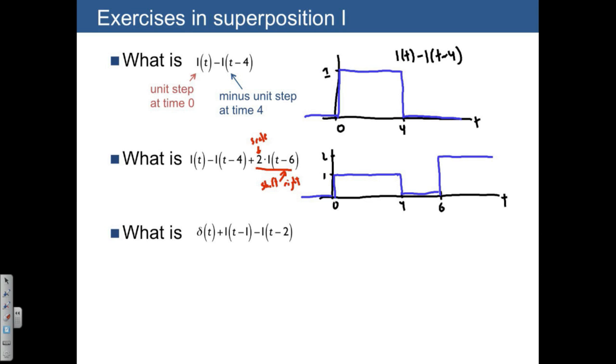The next example involves a unit impulse function and then two steps, one going up and then the next one going down. These are shifted to the right by amounts 1 and 2. If we sketch these, the times of interest are 0, 1, and 2. The height that matters is 1. We're going to use the arrow symbol to denote a unit impulse. A unit impulse at time 0 is drawn with an arrow, which means it's infinitely high and has an area of 1. Then we have a unit step that goes up to 1, and then at time 2, we come back down.